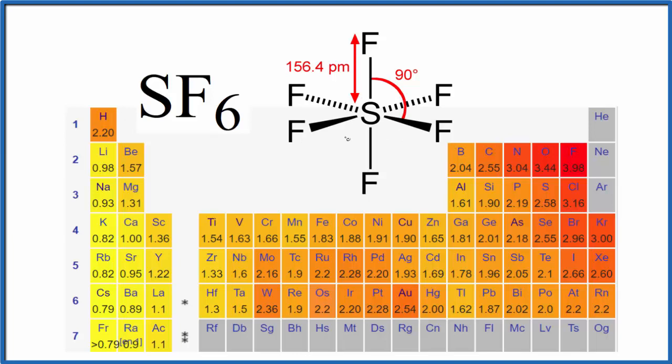What we want to look at is these individual bonds. We're looking at the difference in how the electrons are shared—this pair of electrons between the sulfur and the fluorine. Sulfur is 2.58 (its electronegativity), fluorine is 3.98. That's a pretty big difference. These bonds between the sulfur and each fluorine are going to be polar bonds.